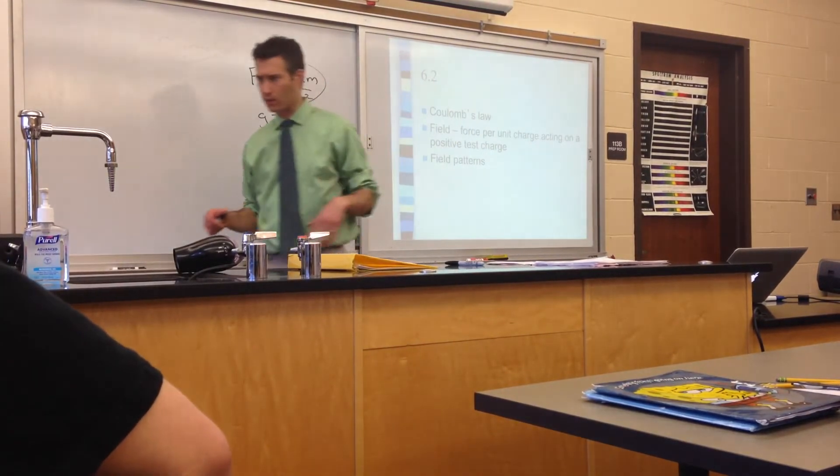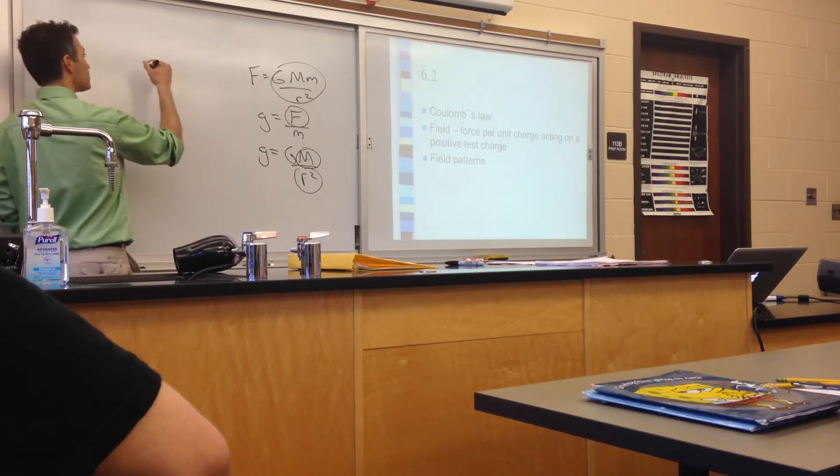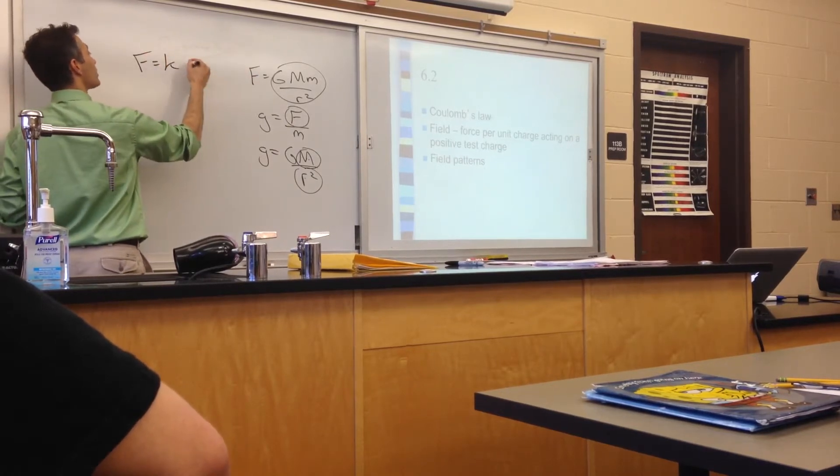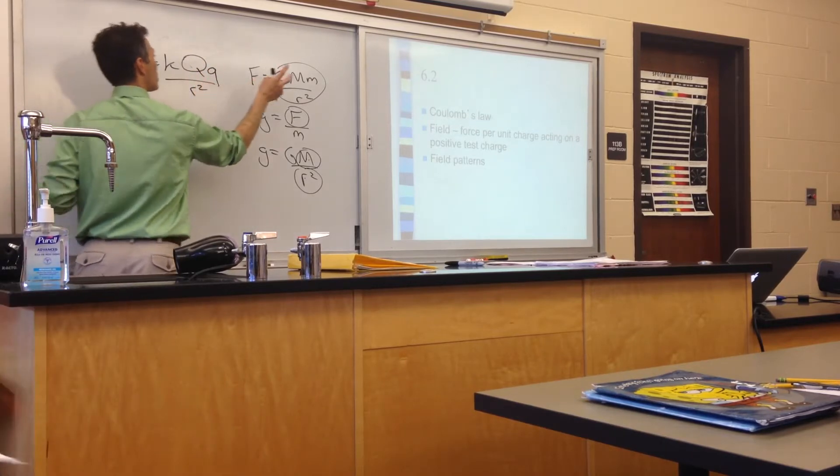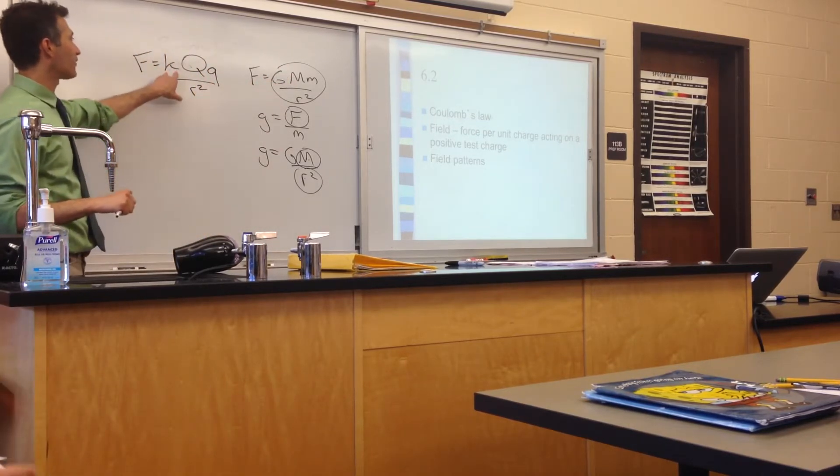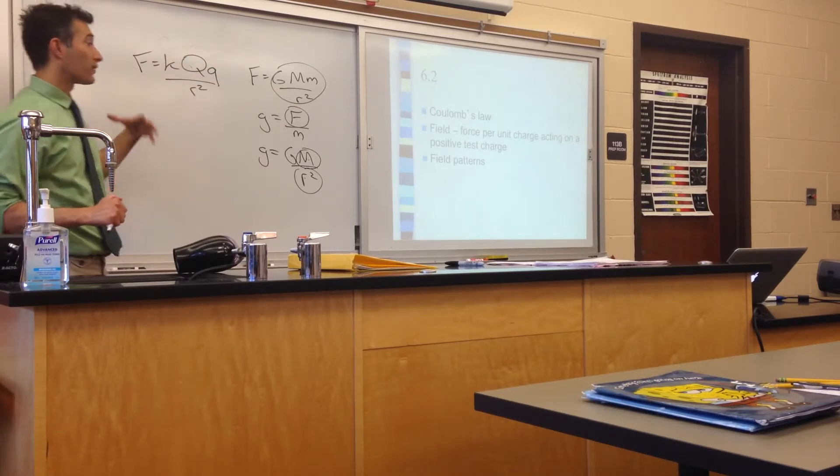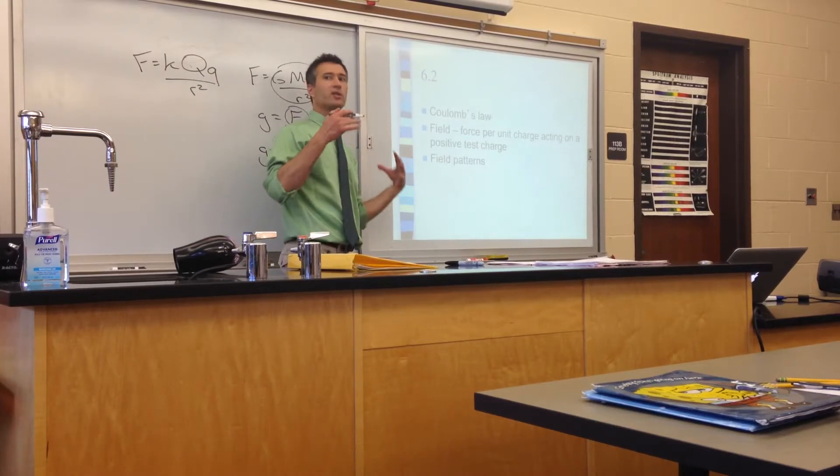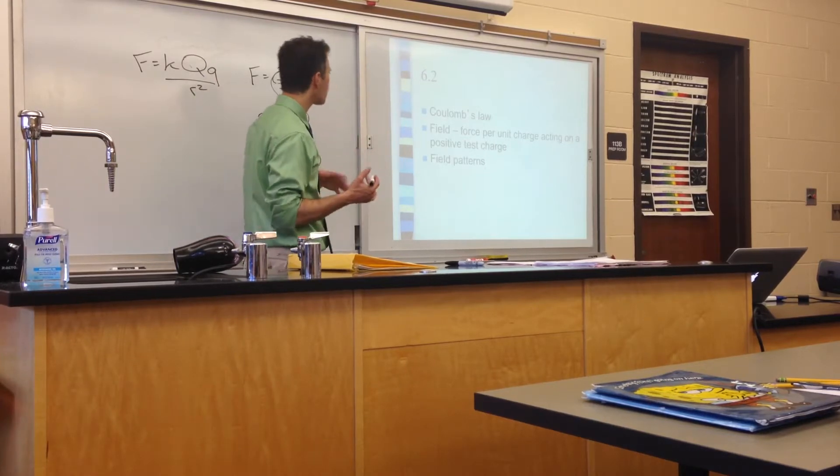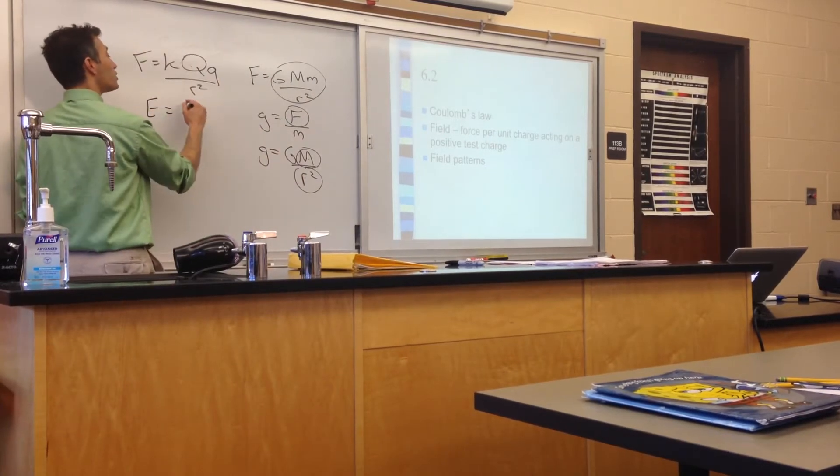6.2 was extremely analogous to 6.1. So our basis for this was the electrostatic force, or the Coulomb force. Very similar to our Law of Universal Gravitation, we just have different constants and Qs instead of Ms. Electric field strength is defined as the force per unit charge acting on a small positive test charge. And similarly, we can derive an expression for that, which would end up being kq over r squared.